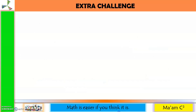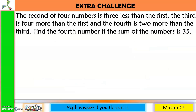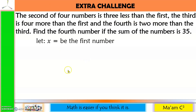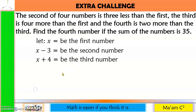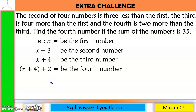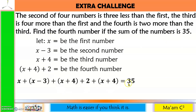Extra challenge: the second of four numbers is 3 less than the first, the third is 4 more than the first, and the fourth is 2 more than the third. Find the fourth number if the sum of the numbers is 35. Let X be the first number. The second is X minus 3, the third is X plus 4, and the fourth is (X plus 4) plus 2. The sum of the numbers equals 35.